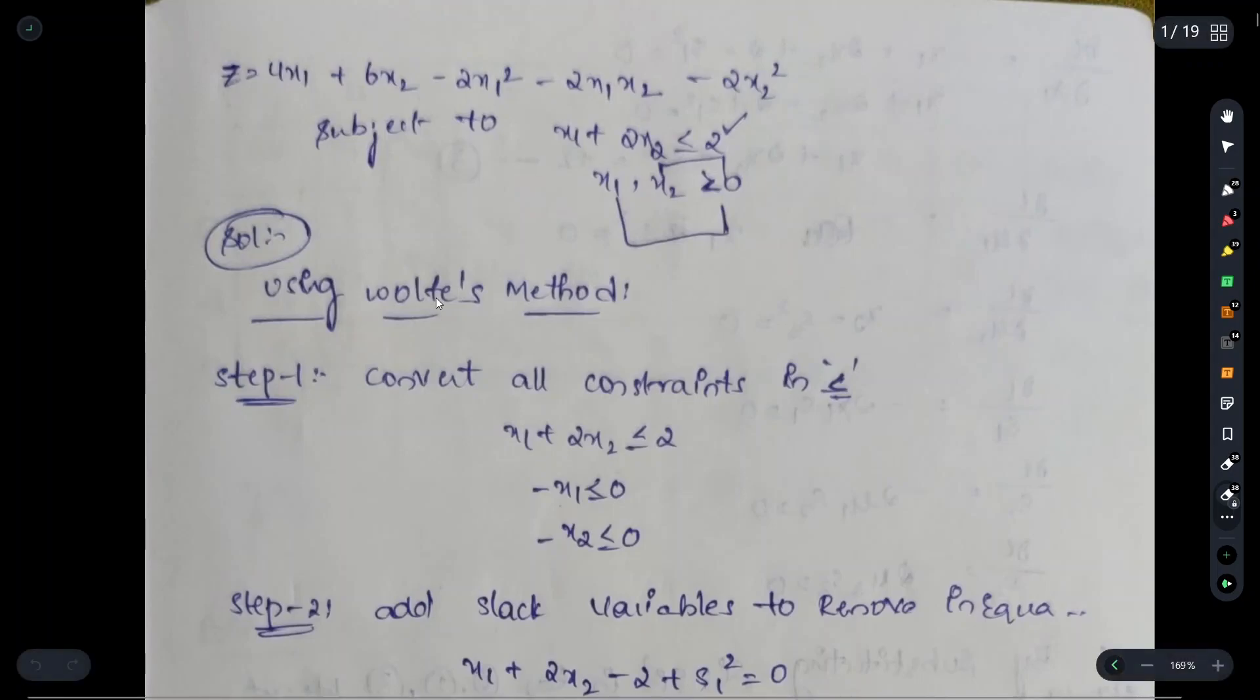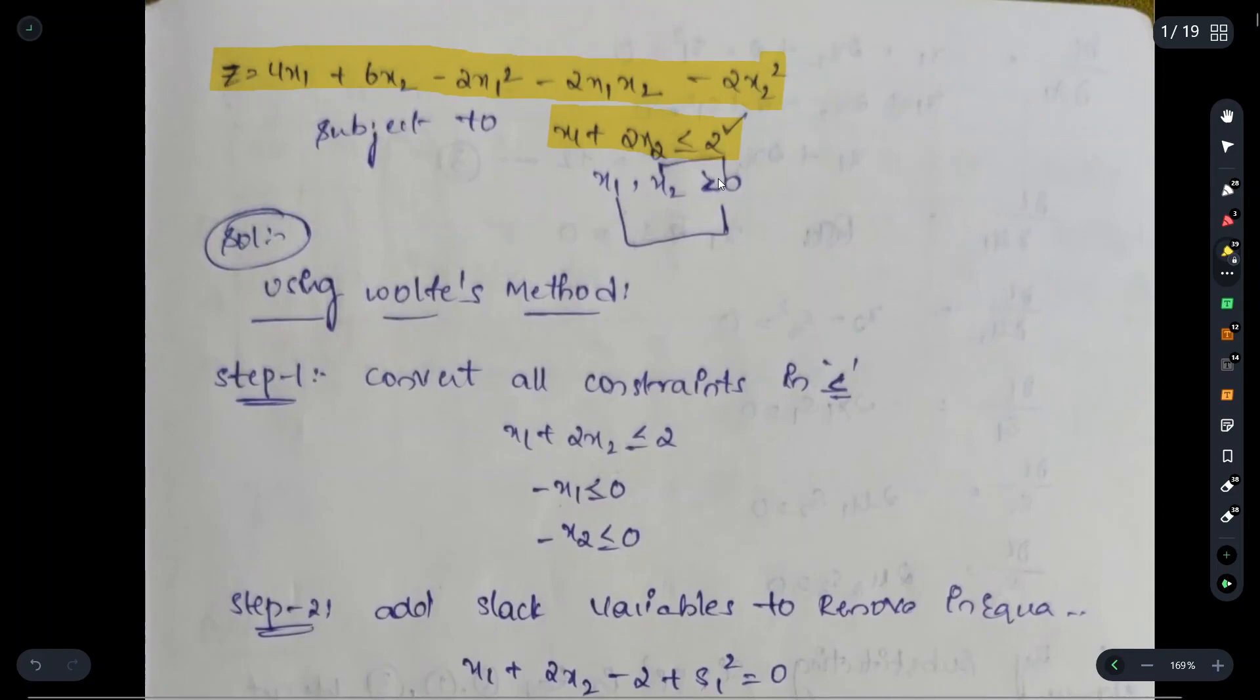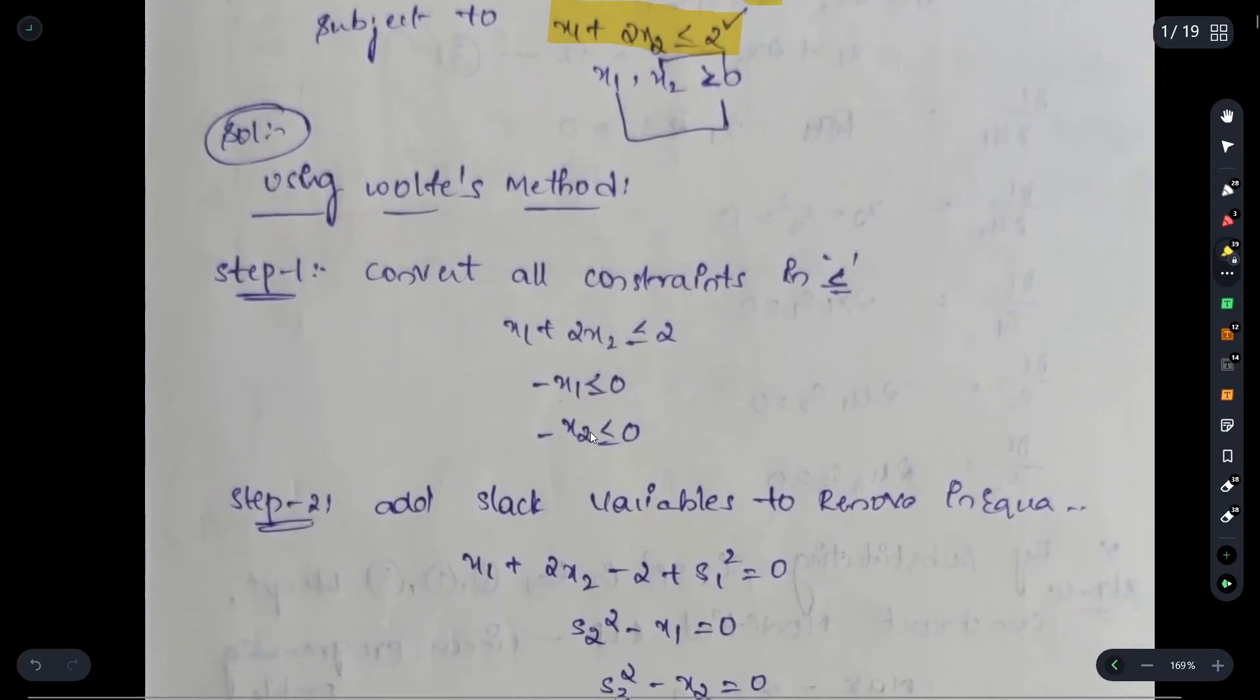Wolf's method - I think it's a 12 marks question. Basically in Wolf's method we have this z equation and constraints. The constraint is given as x1 plus 2x2 less than or equal to 2. We need to make it into an equal symbol. These are normal steps.